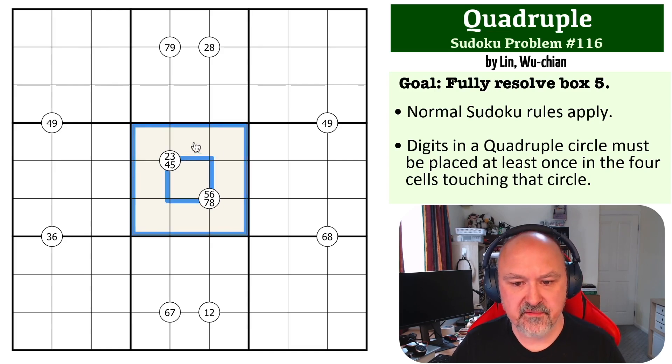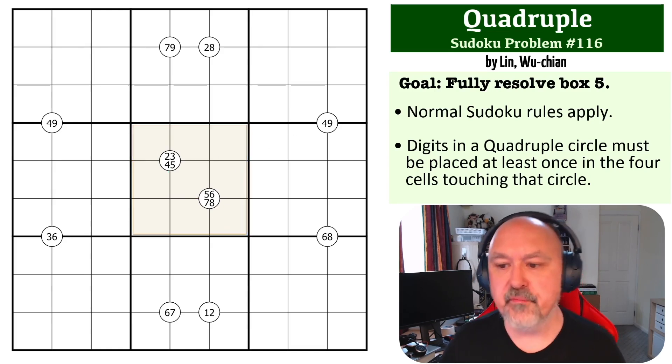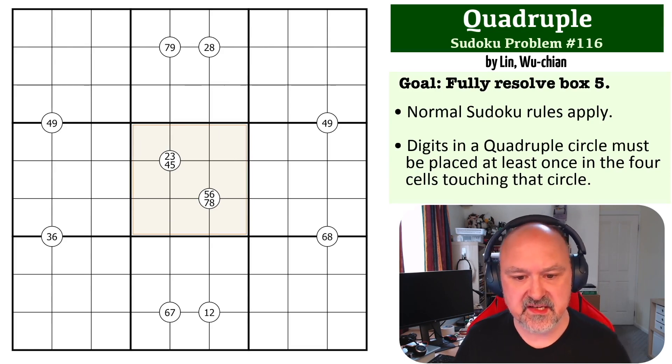The way Quadruple clues work is that the digits in the Quadruple clue must be placed at least once in the four cells touching that clue. There's a link below to a copy of this grid where you can try it for yourself.